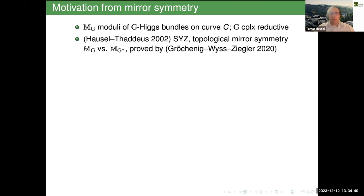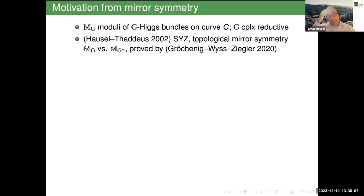This particular topological mirror symmetry was relatively recently proved by Michael Gröchenig, Dimitri Wyss, and Paul Ziegler — two of my students. In fact, Michael Gröchenig just recently got the junior version of the Breakthrough Prize, partly because of this. So the original topological mirror symmetry question is settled by now.